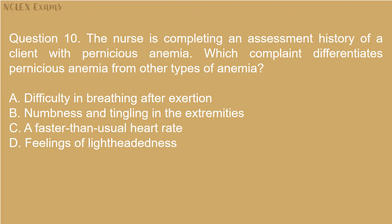Question 10: The nurse is completing an assessment history of the client with pernicious anemia. Which complaint differentiates pernicious anemia from other types of anemia? A. Difficulty in breathing after exertion. B. Numbness and tingling in the extremities. C. A faster than usual heart rate. D. Feelings of lightheadedness.